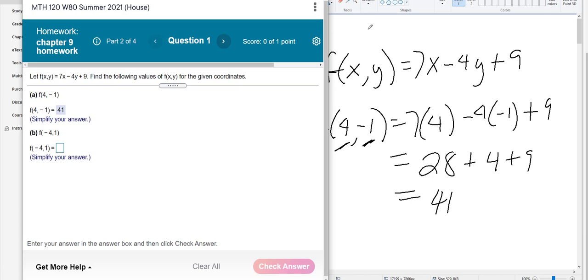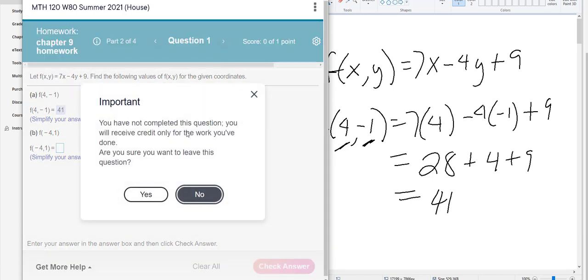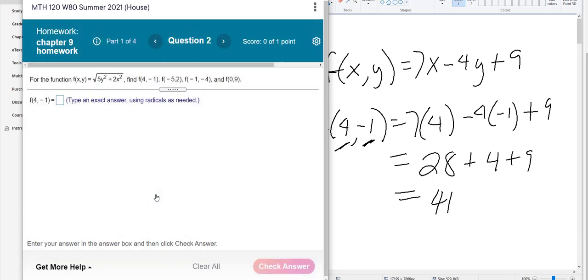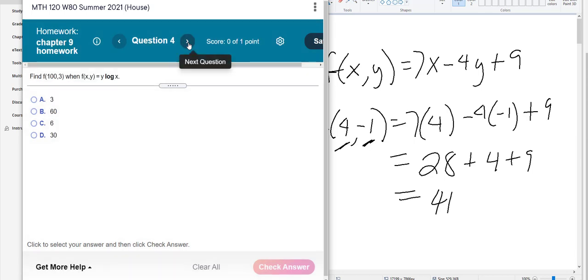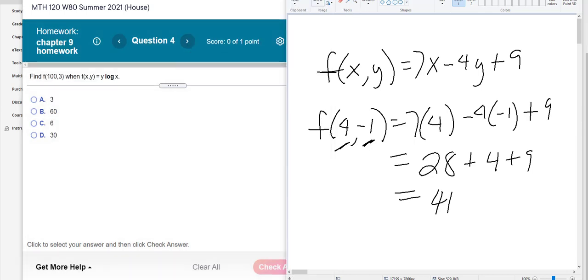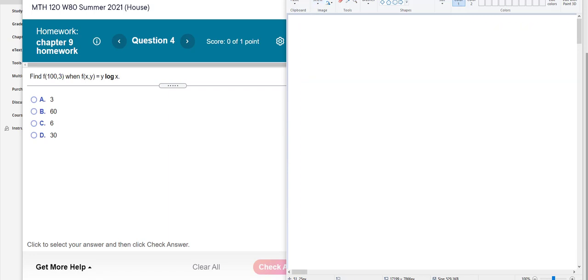So I'm not going to work them all out. You can do that. Just substitute that stuff in there. Same thing for number 2, same thing for number 3. And again, these are all worked out. Let me do the one with the log, because you're not used to doing too many logarithms. So it says find f of 100, 3 when f of x, y is y log of x.